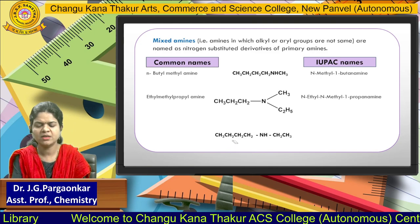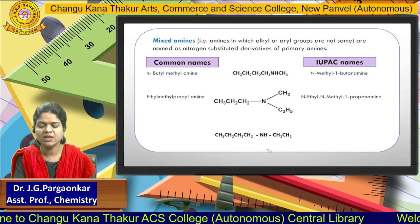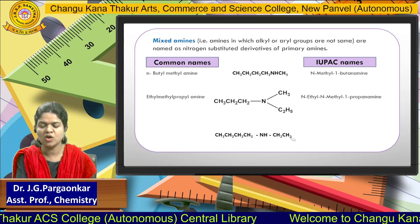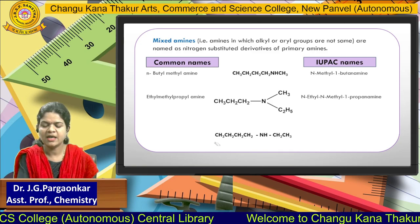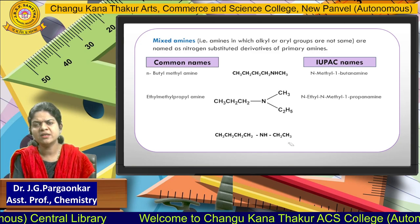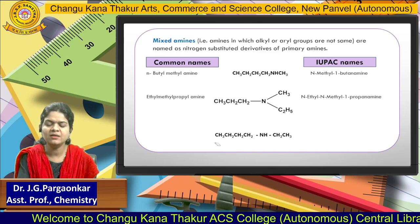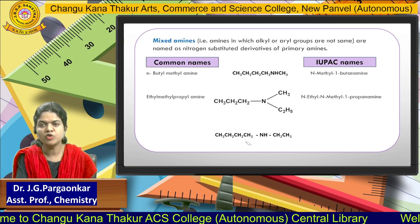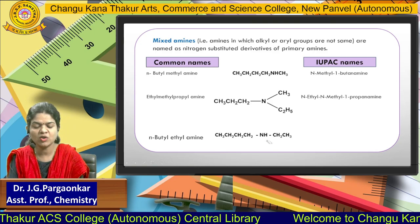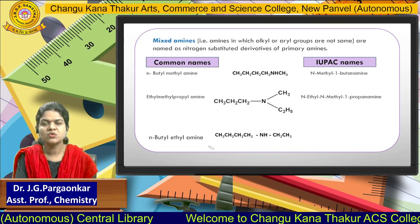For the next structure, can you tell me the common name? Two substituents are there: ethyl and butyl. Arrange in alphabetical order — butyl comes first — so that's why it is butyl ethyl amine. Let's check: yes, butyl ethyl amine. These are the rules for the common name.